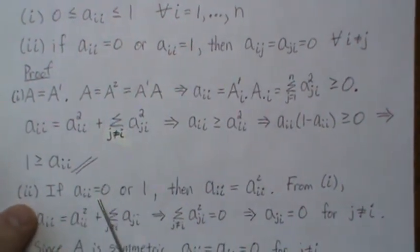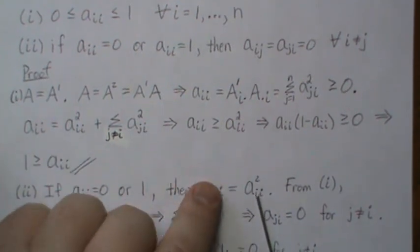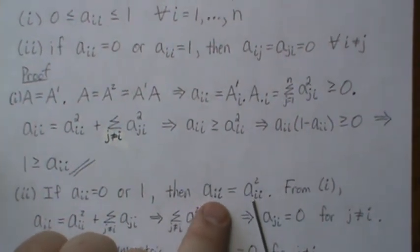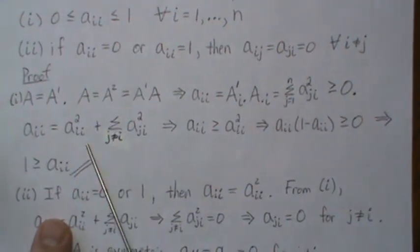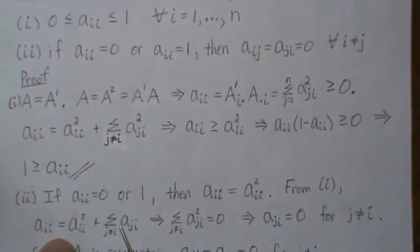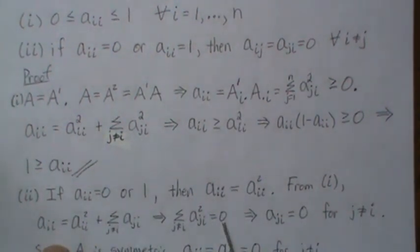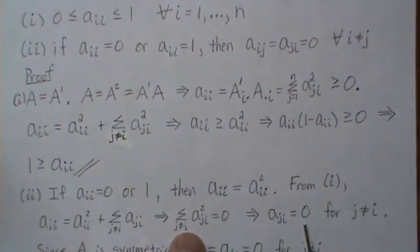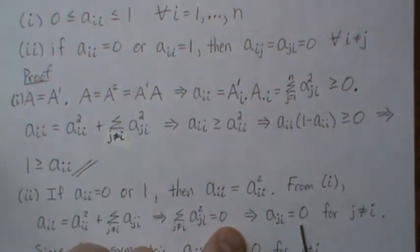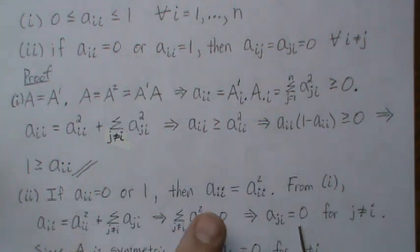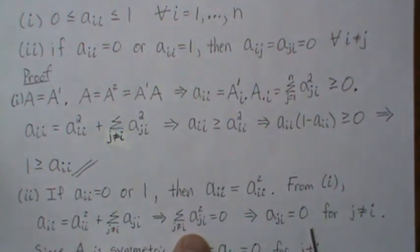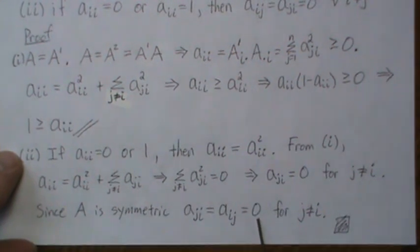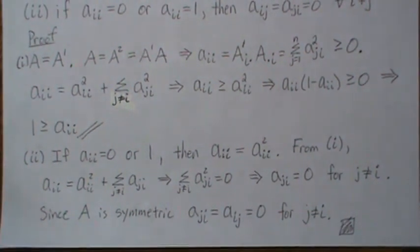Now assume A_ii is 0 or 1. Then A_ii squared equals A_ii. For the diagonal equation to hold, the remaining sum must equal zero. Since it's a sum of squares, each term A_ji must be zero for all j not equal to i. Since A is symmetric, A_ji equals A_ij, which is also zero for all j not equal to i. That's exactly what we needed to show.